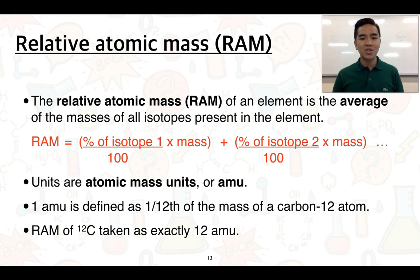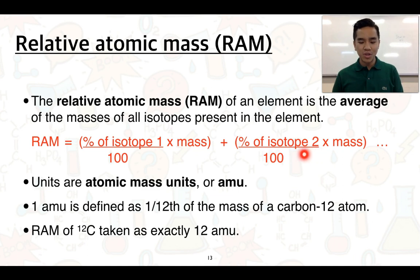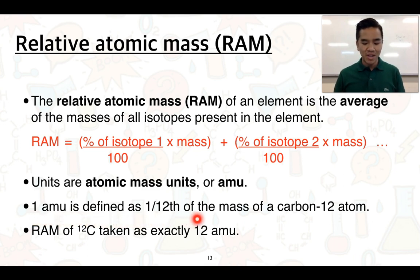If we had two different isotopes for a particular element and we want to calculate the relative atomic mass, we take the percentage of the first isotope, convert it to a decimal by dividing by 100, and multiply by the mass number. Then we add a similar term for isotope 2: its percentage divided by 100, multiplied by its mass number. If we have three isotopes, we simply add a third expression. The units for relative atomic mass are atomic mass units, or AMU. One AMU is defined as one-twelfth of the mass of a carbon-12 atom, since carbon-12 is used as our standard — its relative atomic mass is treated as exactly 12 AMU.